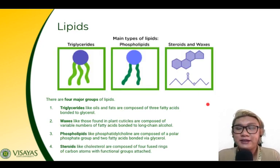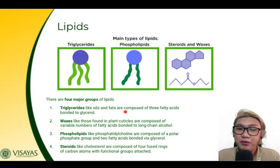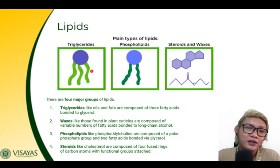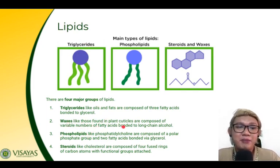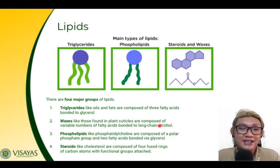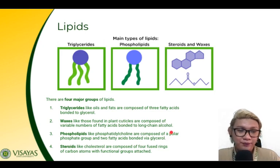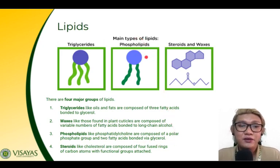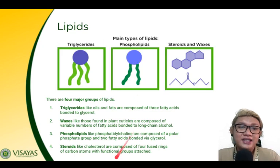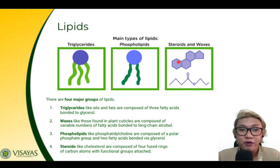There are four main groups of lipids. Triglycerides — like oils and fats — are composed of three fatty acids bonded to glycerol. Waxes, like those found in plant cuticles, are composed of variable numbers of fatty acids bonded to a long-chain alcohol. Phospholipids, like phosphatidylcholine, are composed of a polar phosphate group and two fatty acids bonded via glycerol. Steroids, like cholesterol, are composed of four fused rings of carbon atoms with functional groups attached.